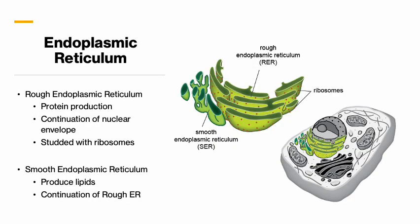The endoplasmic reticulum is located right outside of the nuclear envelope — it's a continuation of the nucleus, though it doesn't hold DNA. The rough ER is the first one outside of the nucleus, and it's rough because it's studded with ribosomes. The rough ER modifies and folds proteins after they've been produced in the ribosomes, then packages them. Outside of the rough ER we have the smooth ER — it flows into it, just stops having ribosomes, and that's where lipids are produced.